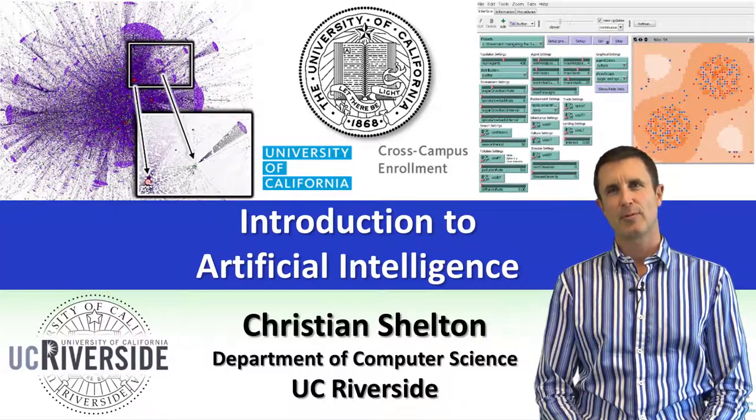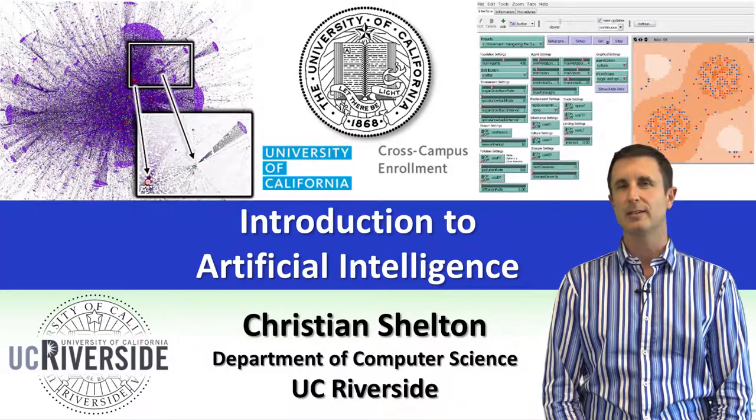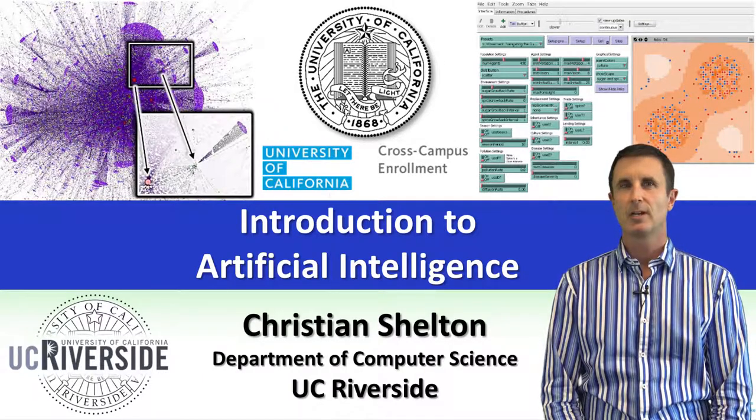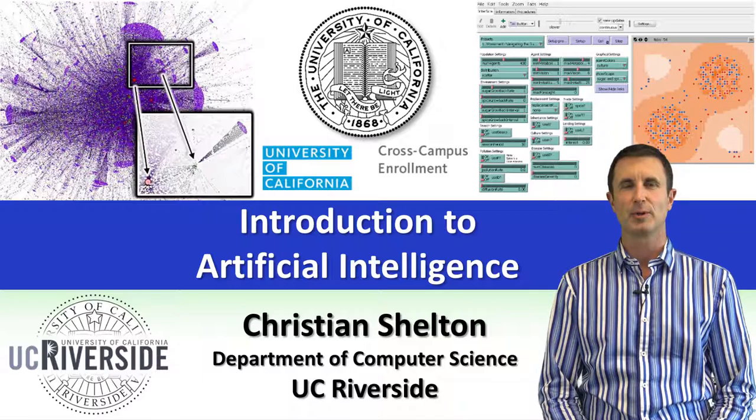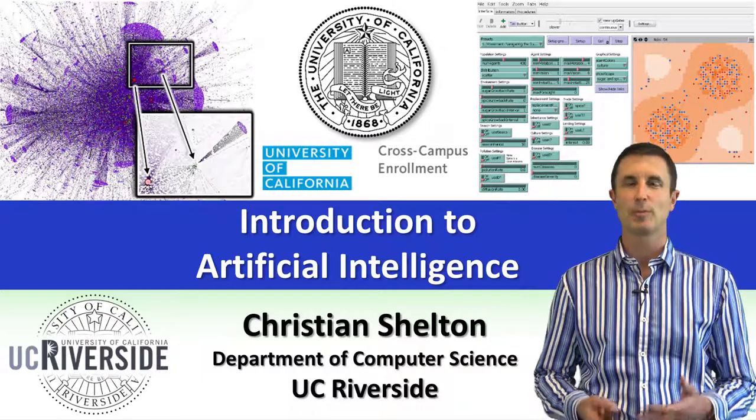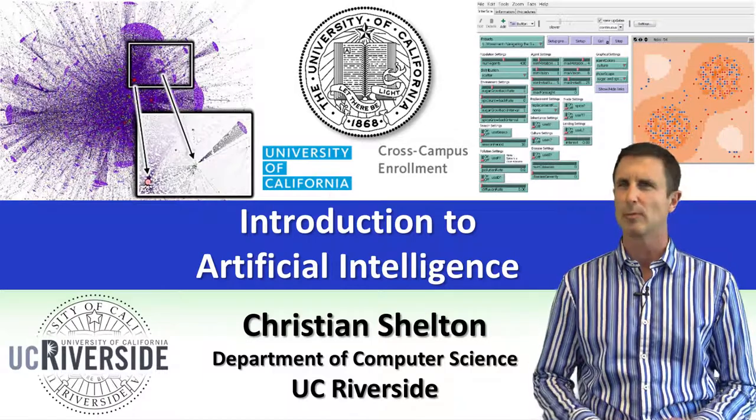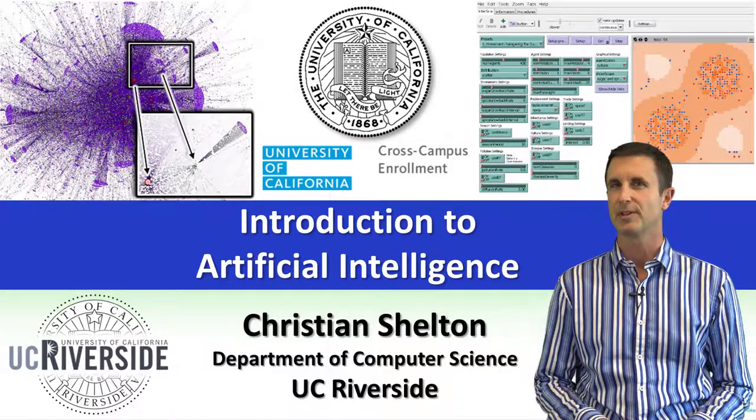Hi, I'm Christian Shelton. I'm a professor at UC Riverside. I work in artificial intelligence and specifically machine learning. Right now I'd like to talk a little bit about artificial intelligence, a little about the history, what it is, and maybe give some examples of the types of problems people in artificial intelligence work on or think about.